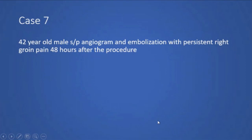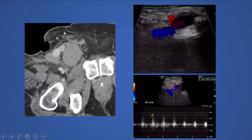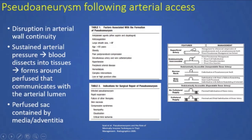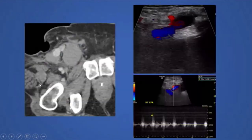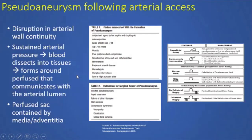The next case is a 42-year-old male with persistent right groin pain 48 hours after an angiogram and embolization procedure. CT and ultrasound demonstrate an abnormality arising off the common femoral artery with arterialized flow within a sac — a pseudoaneurysm caused by arterial access. A pseudoaneurysm is a disruption in arterial wall continuity where blood dissects into tissues forming a perfused sac. Treatment is ultrasound-guided compression first; if unsuccessful and the neck is narrow, thrombin injection under ultrasound guidance; otherwise, surgical referral.